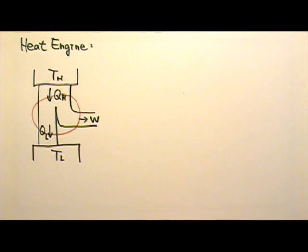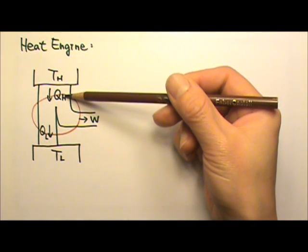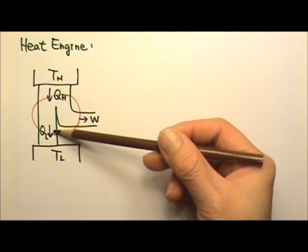Examples of heat engines include steam engines, internal combustion engines, etc. Basically, we burn fuel to provide heat for the engine to do work. In the process, we always waste a lot of heat.